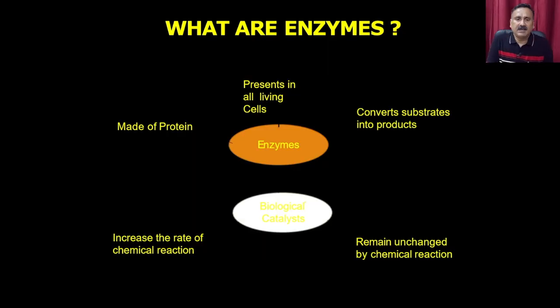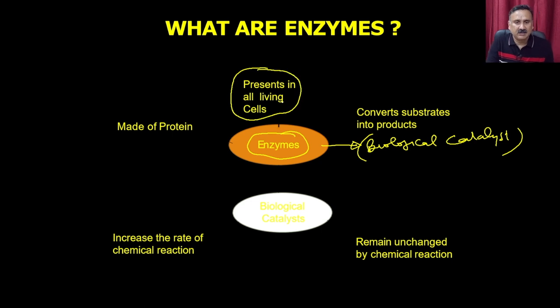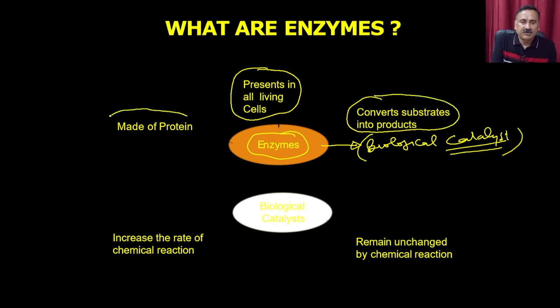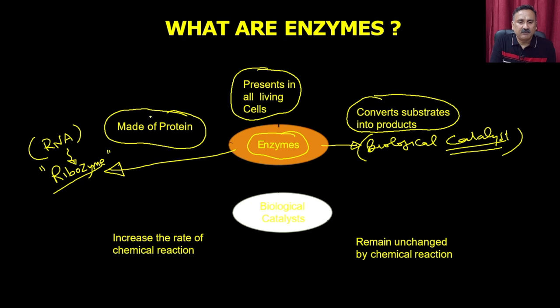What is an enzyme? The enzyme, as the name suggests, is also called a biological catalyst. These are catalyst molecules present in all living cells. Just like any other chemical catalyst, their job is to convert the substrate into the product. Enzymes are mostly made up of protein, with the exception that some enzymes are made up of RNA molecules — these enzymes are called ribozymes. The amount of ribozymes is very small and they are required for specific functions, but the majority of enzymes are made up of protein molecules.